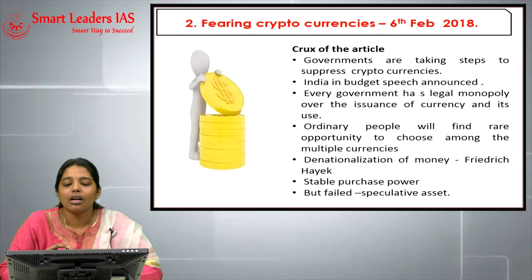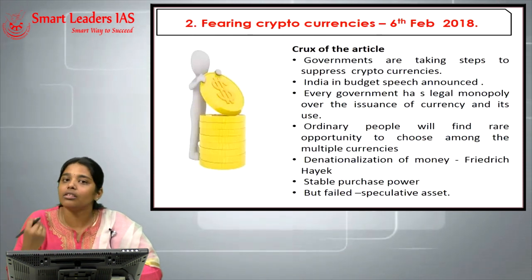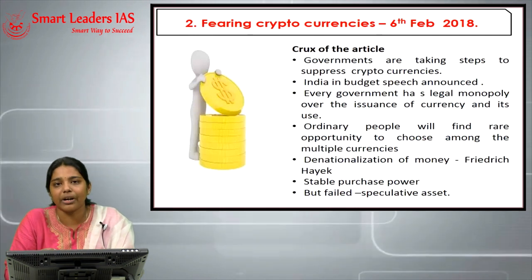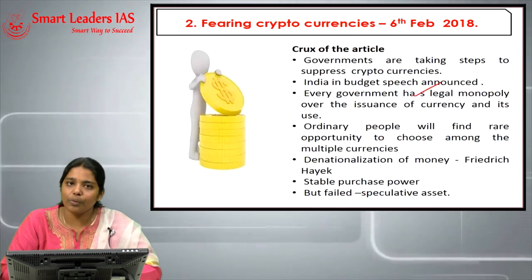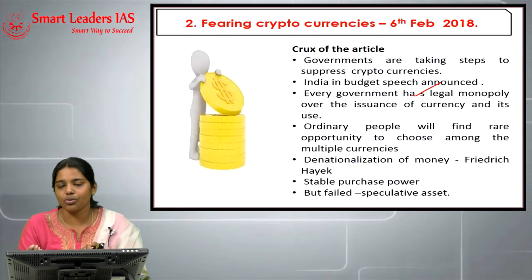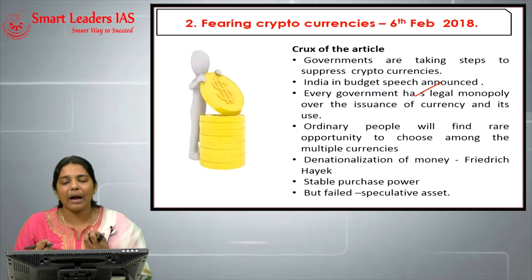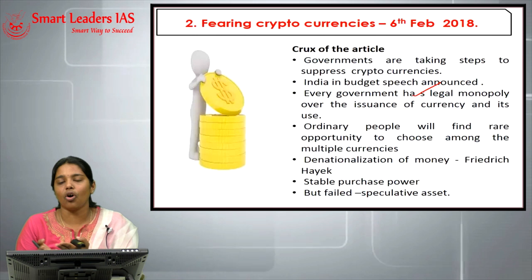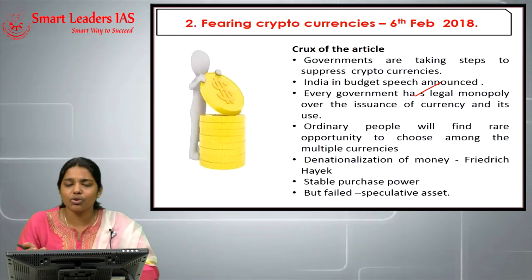The crux of the article: governments worldwide are taking steps to suppress cryptocurrencies — Vietnam and many others are following. Interestingly, Venezuela became the first nation to adopt a virtual currency called 'Petro.' In India, it was announced in the budget speech. Every government has a legal monopoly over currency issuance; if virtual currencies come into play, this monopoly becomes ineffective, and the very concept of banking as a facilitator may fade away.